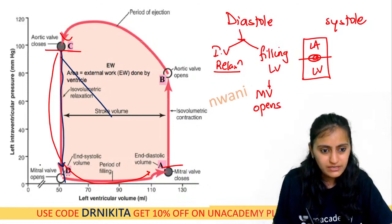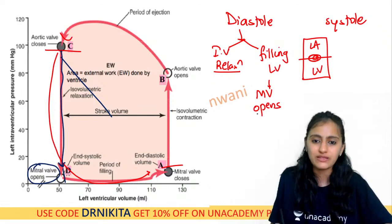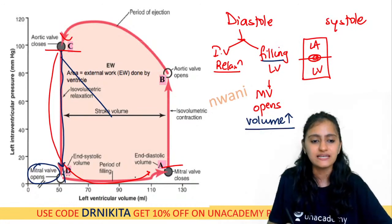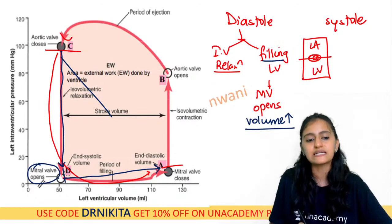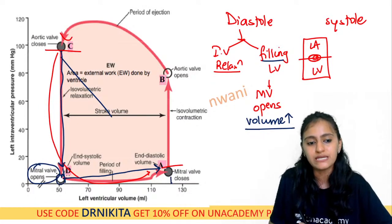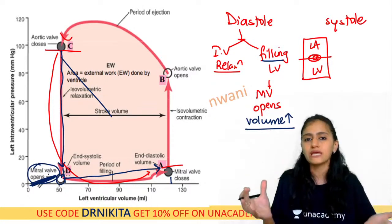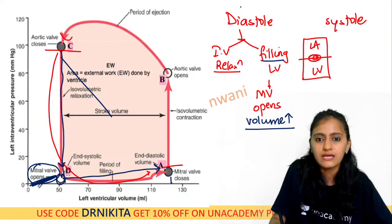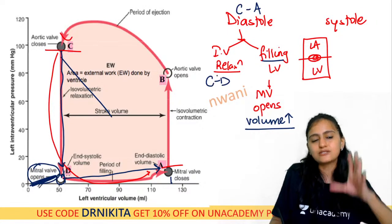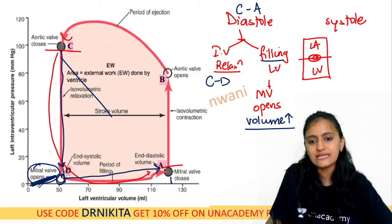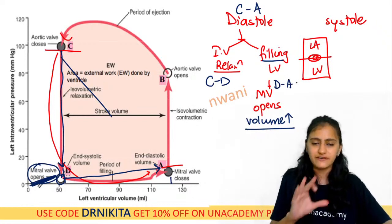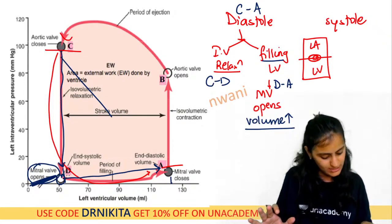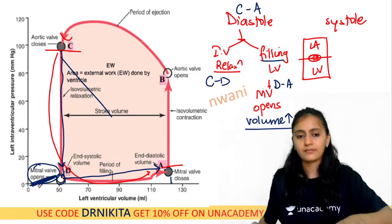When the mitral valve opens, filling happens — the volume of the left ventricle increases from about 50 up to 120. So the point where you see volume increasing is where the mitral valve is opening. Point C to A is diastole: C–D is isovolumetric relaxation, and D to A is the filling phase.